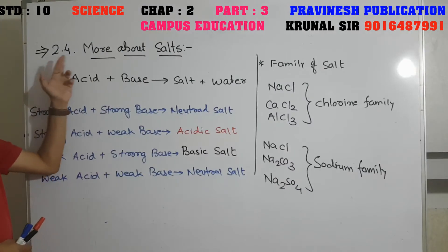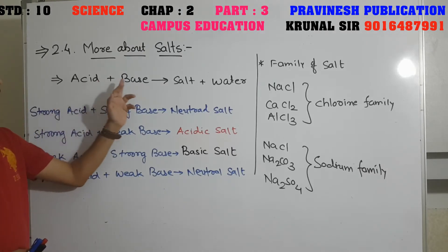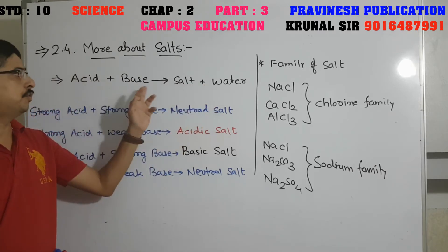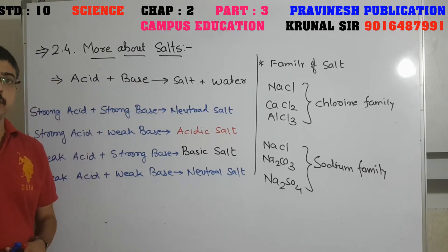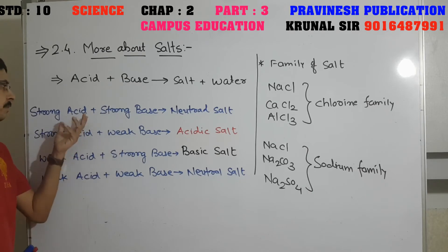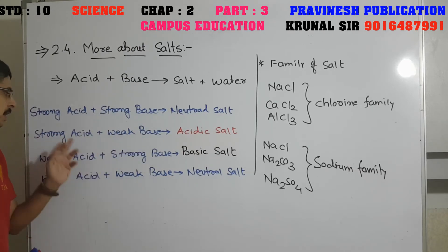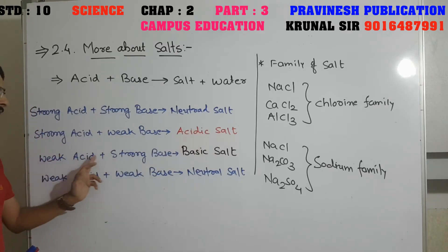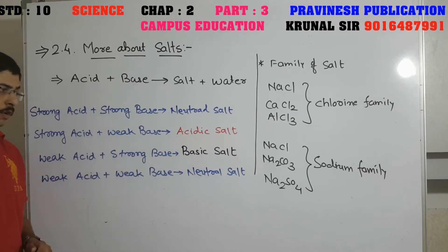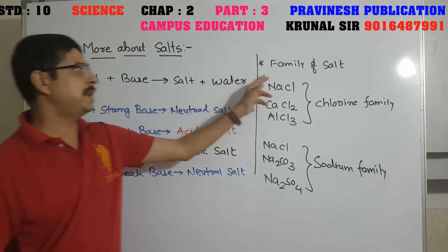This is the importance of pH in our daily life that you need to remember for board exams. Now, Topic 2.4 — More About Salt. We got information about acid and base. Acid plus base gives salt plus water — this is known as a neutralization reaction. But are salts always neutral? No, it depends on the strength of the acid and base taken. Strong acid and strong base gives neutral salt; strong acid and weak base gives acidic salt; weak acid and strong base gives basic salt; and weak acid and weak base gives neutral salt.